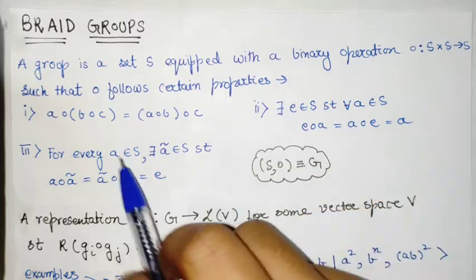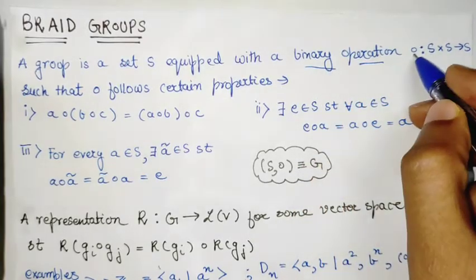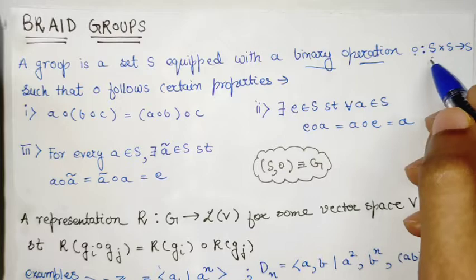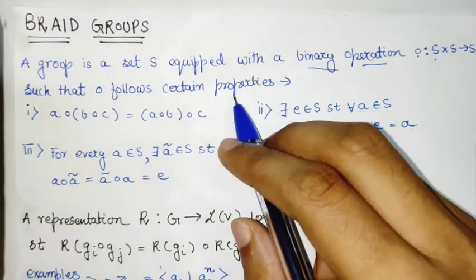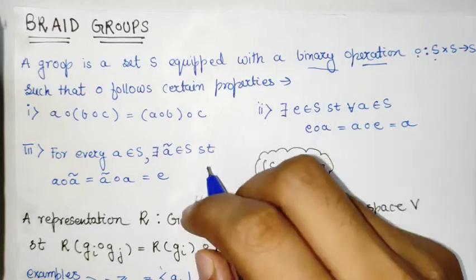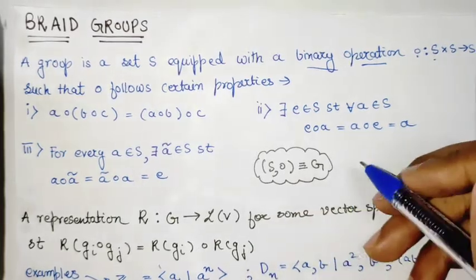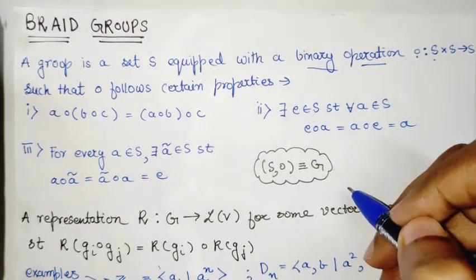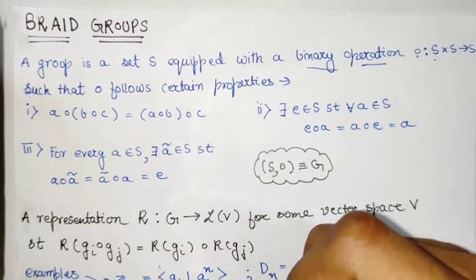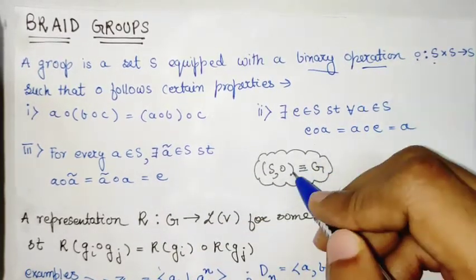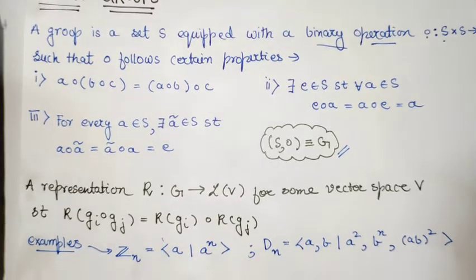We start from the basics: what is a group? A group is a set equipped with a binary operation. This binary operation is closed — the closure property — so it maps two elements of the set to another element of the same set. A set is a group when it follows closure, associativity, the existence of an identity element, and the existence of an inverse for every element.